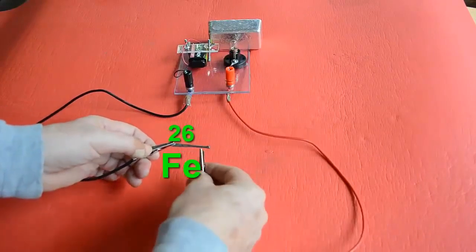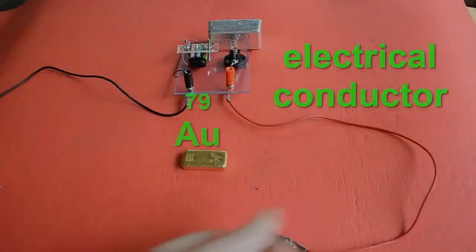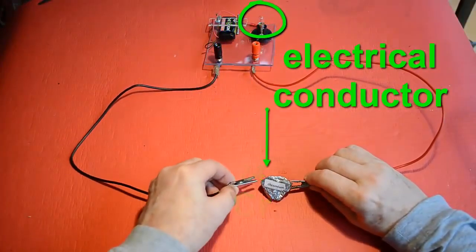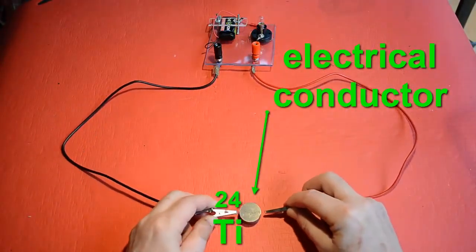Metals also conduct electricity and heat. Here, the different metals are connected to an electrical circuit. If the bulb lights up, it means that the thing is an electrical conductor. They all are.